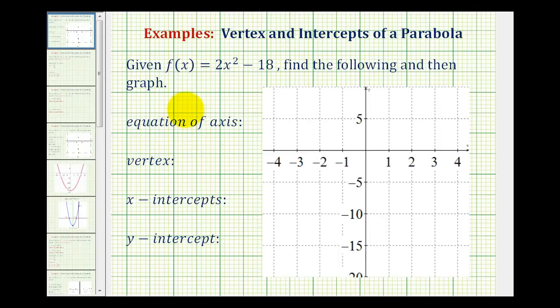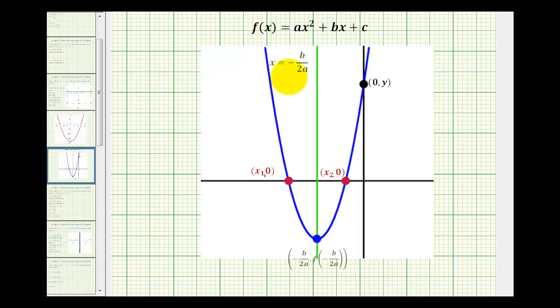Let's start with a quick review. The graph of a quadratic function, as we see here in blue, is a parabola. This green vertical line is called the axis of symmetry. It always has the equation x equals negative b over 2a.